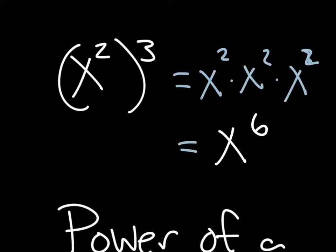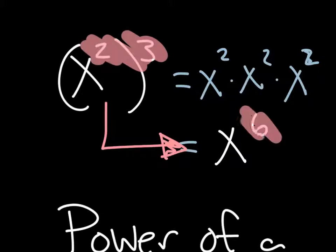My question for you is how can we go from here directly to there? What pattern do you see? What are you seeing happening up here with these exponents that lets us start with the two and the three and get to six?